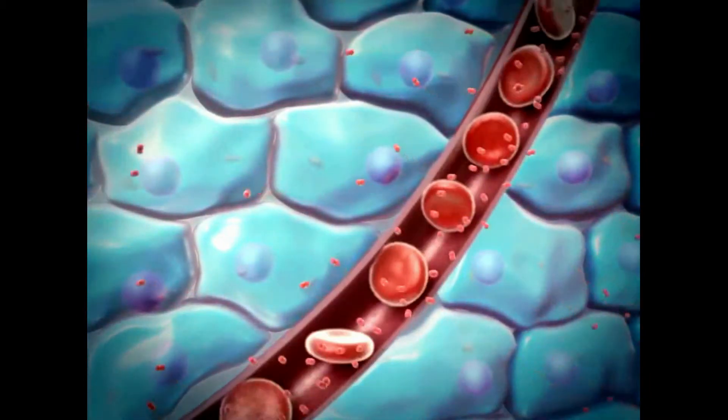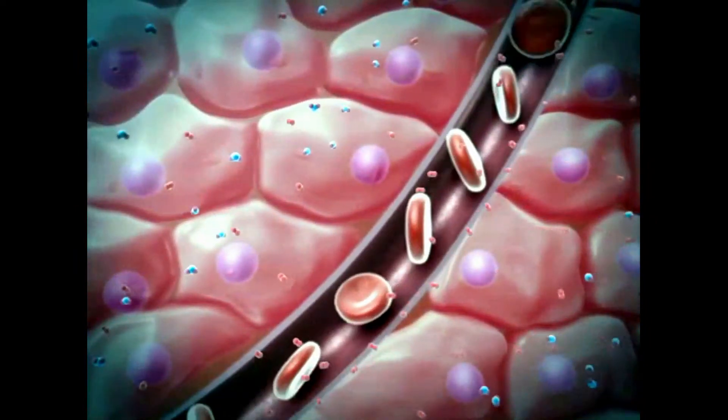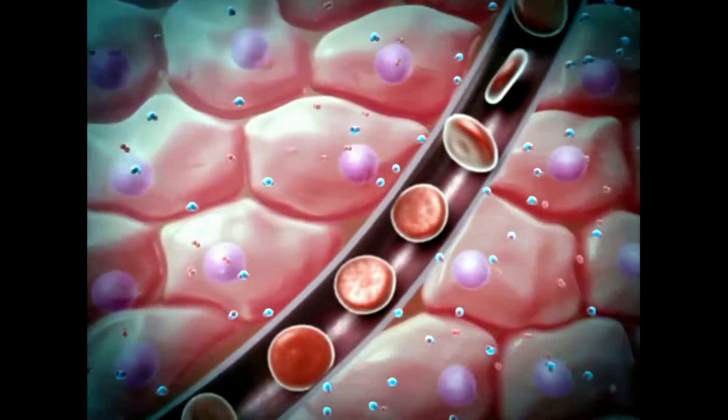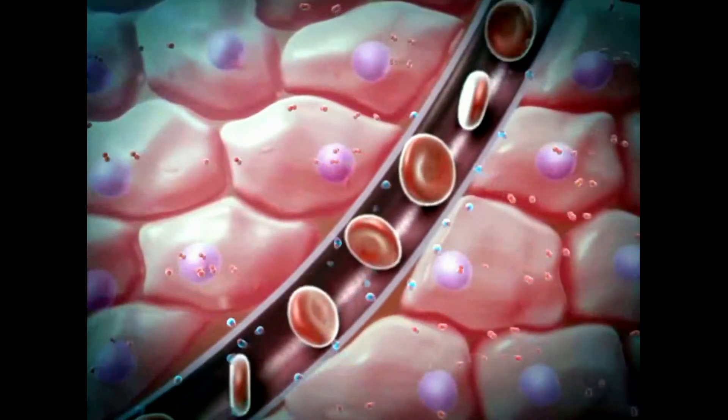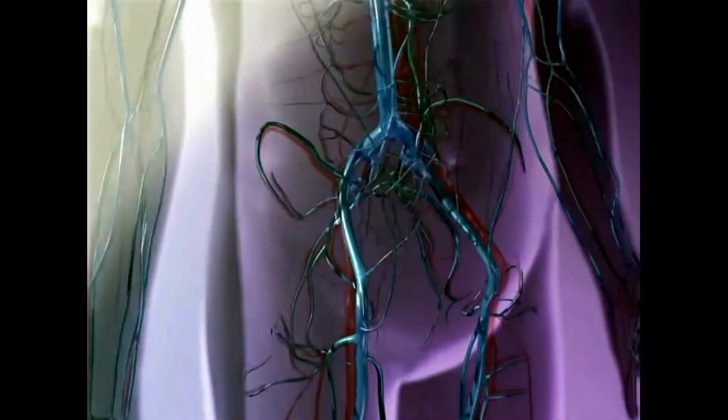Meanwhile, the waste product carbon dioxide diffuses into the bloodstream where it is carried inside red blood cells and in plasma. The deoxygenated blood travels through the vasculature and back to the lungs where carbon dioxide is expelled from the body.